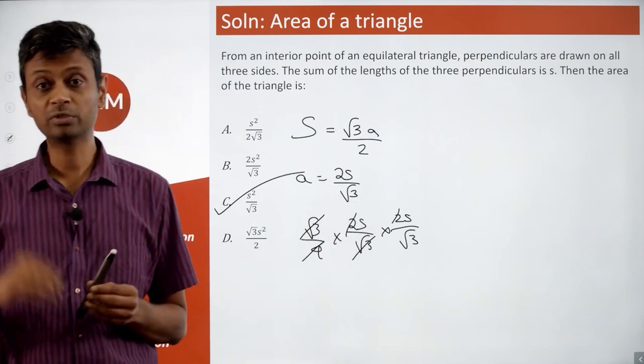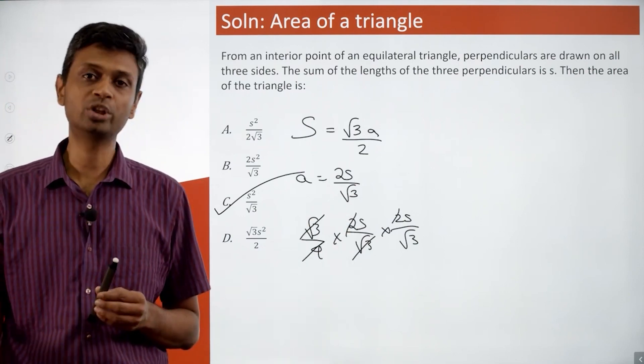And the sum of the three altitudes, sum of the three perpendiculars will be equal to the altitude of the equilateral triangle.